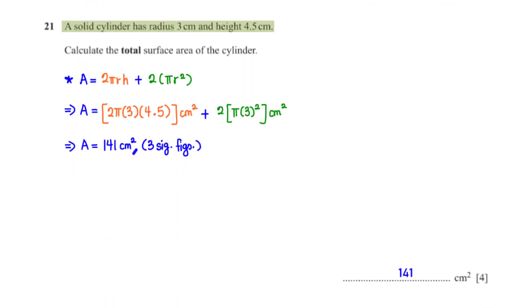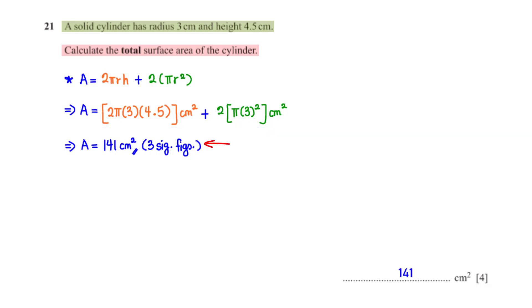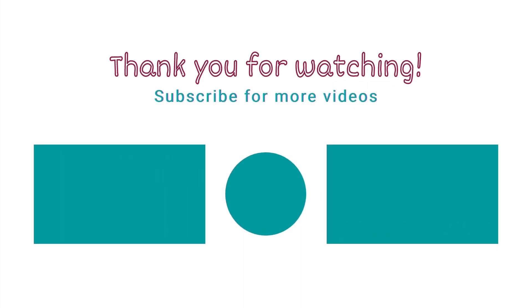A solid cylinder has radius 3 cm and height 4.5 cm. Calculate the total surface area. The total surface area equals the curved surface area 2πrh plus the two circular ends 2πr². With r = 3 and h = 4.5, typing this into the calculator gives 141 cm² rounded to three significant figures. Thank you for watching — see you in the next video!